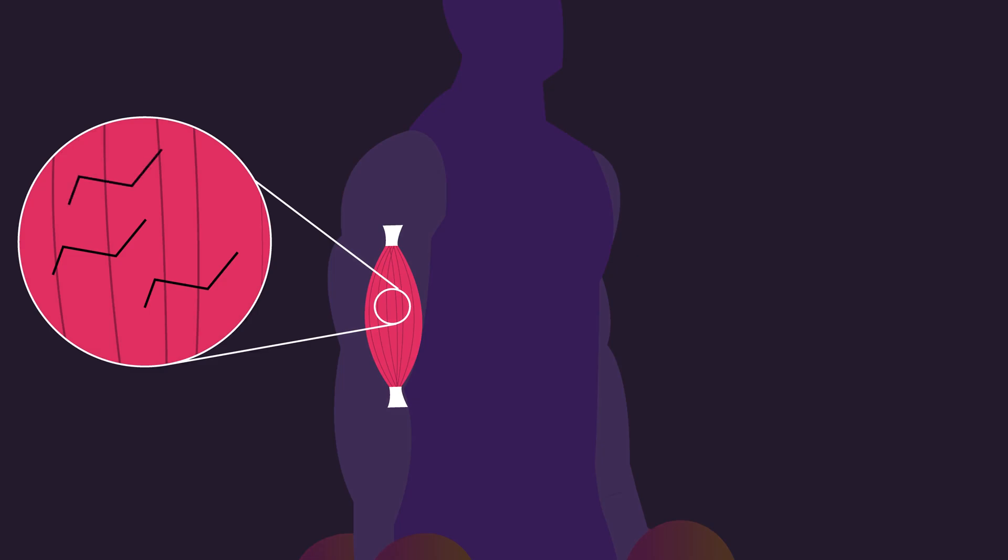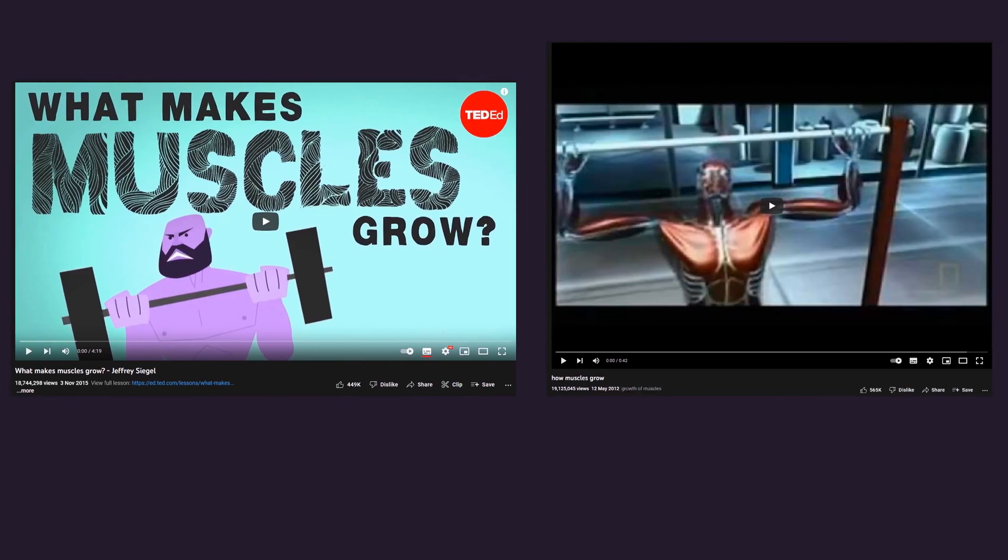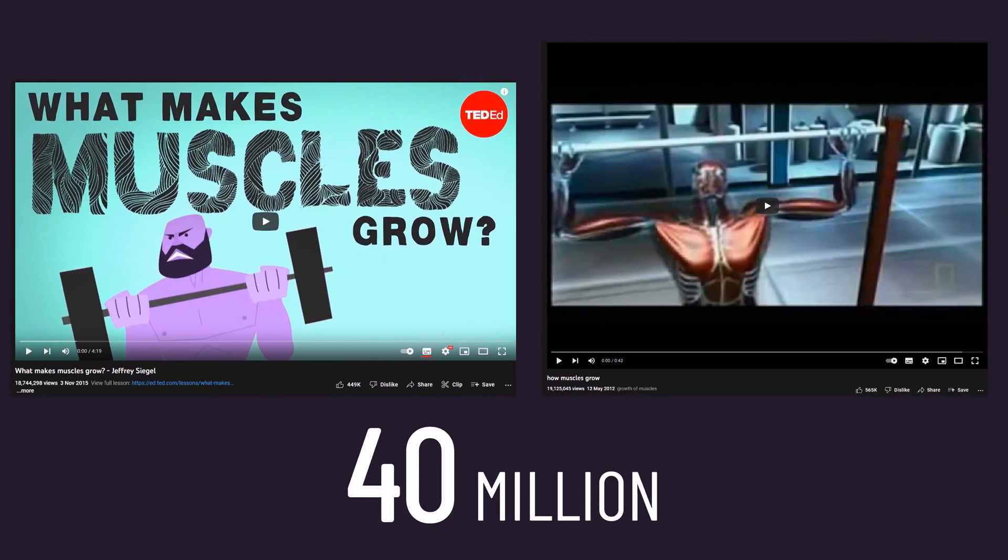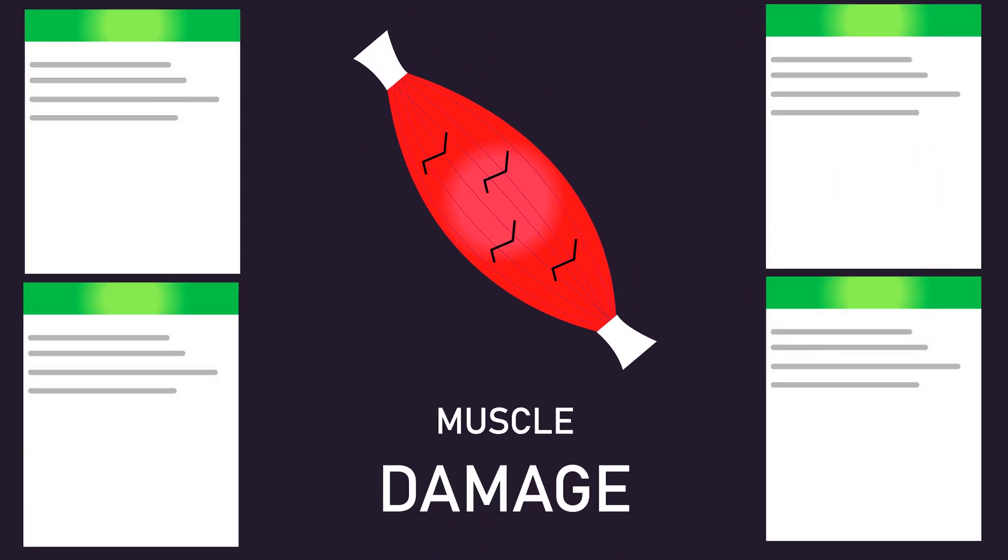Besides soreness, it's frequently believed muscle growth directly occurs because exercising creates micro tears in the muscle. Your body responds by healing the micro tears and making the muscle bigger. These two videos with a combined near 40 million views both put forth this idea. But what does the literature say on the role of muscle damage in muscle hypertrophy?